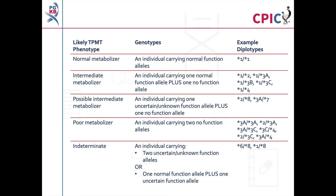Patients can be assigned a TPMT metabolizer phenotype based on the functional status of their TPMT alleles. This table shows the different metabolizer phenotypes that can be assigned along with example diplotypes. This information can also be found in Table 1 of the guideline. Gene information tables for TPMT, including a diplotype phenotype table listing the metabolizer phenotype of each possible TPMT diplotype, are available on the PharmGKB website. A link to these tables is given in the description below this video.